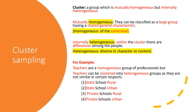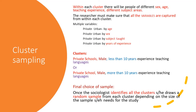Heterogeneous means diverse in character or content. Let us take an example of teachers. Teachers are a homogeneous group of professionals — they are all called teachers. But teachers can be clustered into heterogeneous groups as they are not similar in certain respects. For instance, they may be working in different types of schools: state schools in rural or urban areas, private schools in rural or urban areas. Within each cluster there will be people of different sects, age, teaching experience, and teaching different subject areas. The researcher must make sure that all the variables are captured from within each cluster.